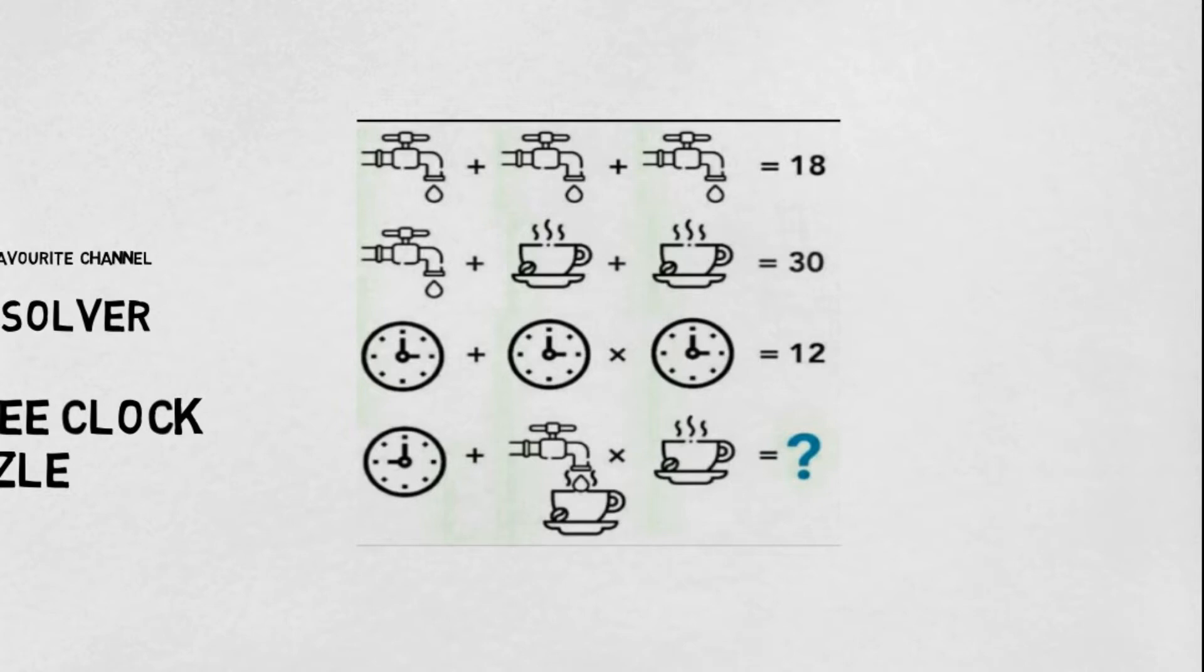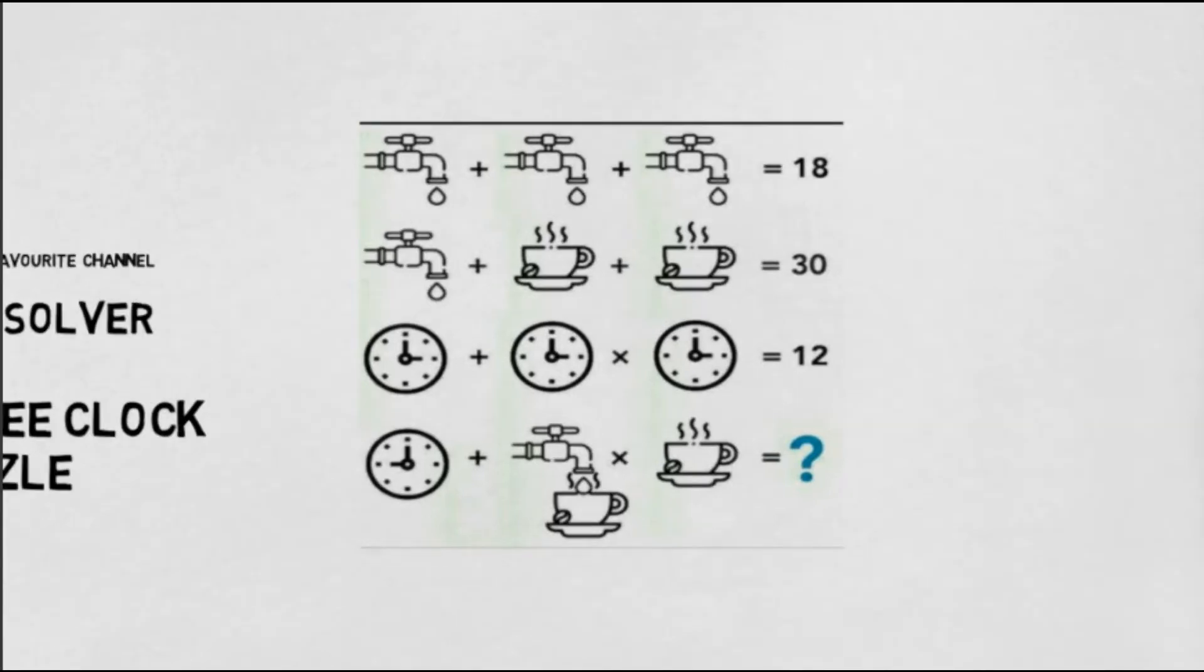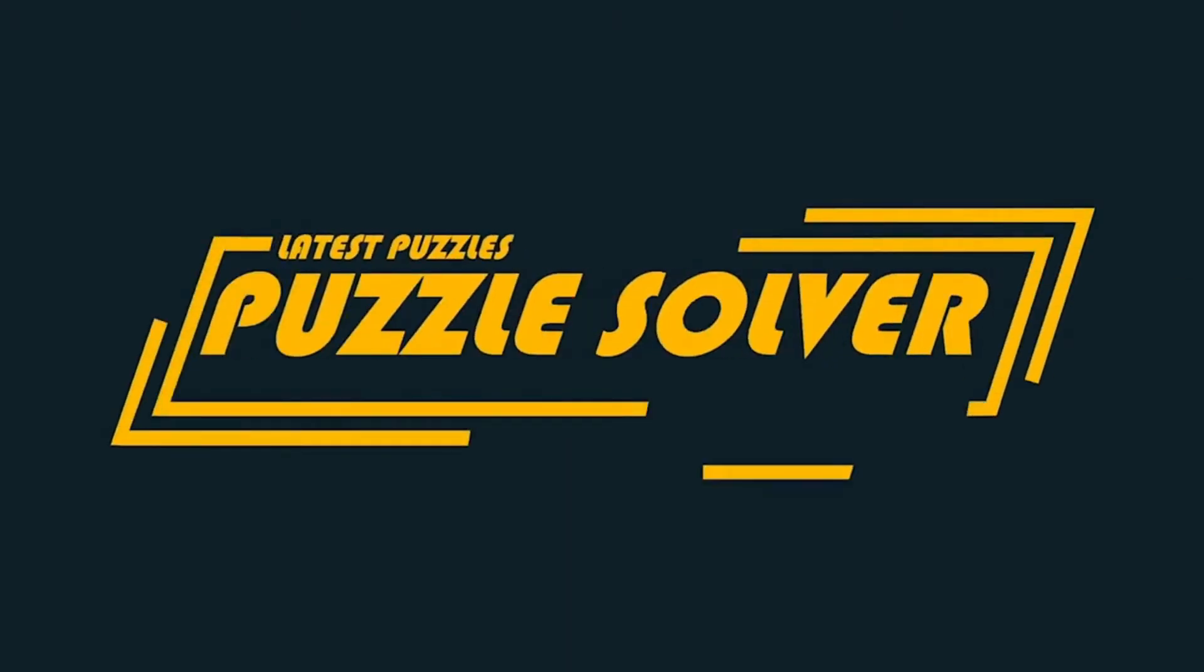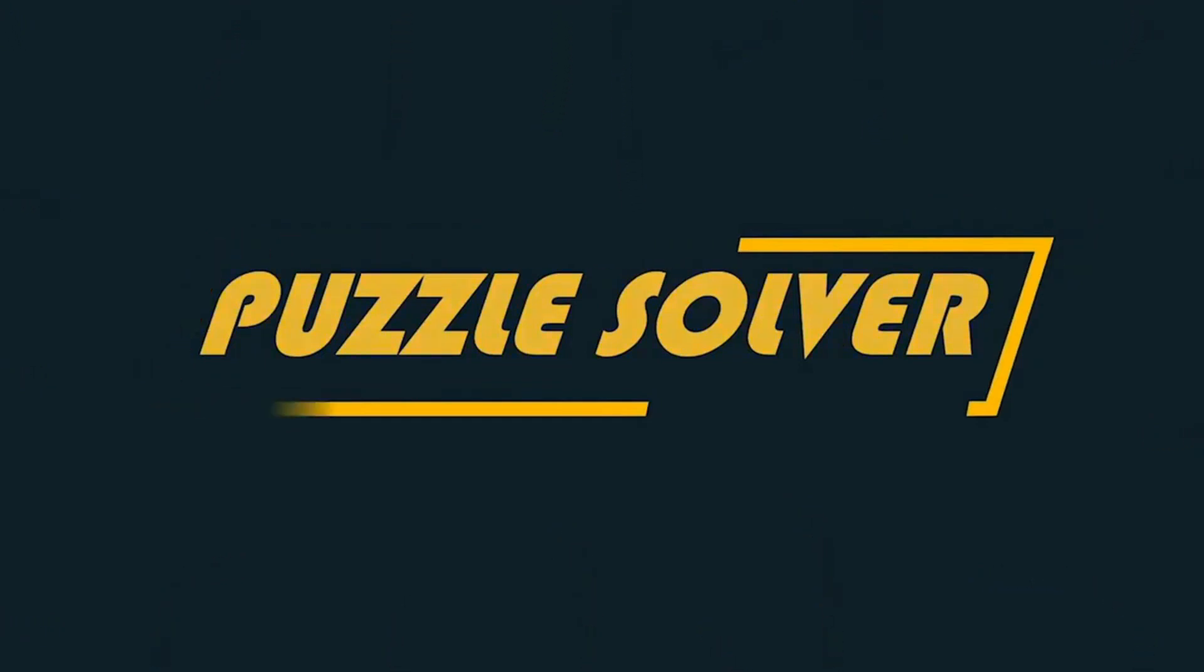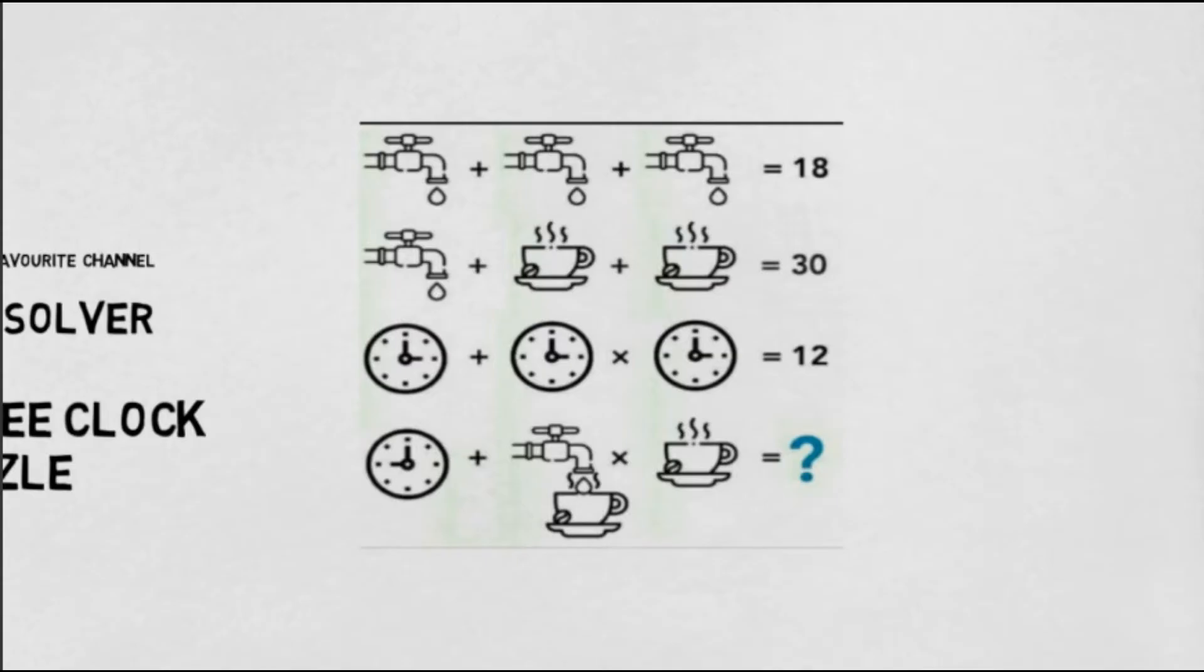We need to find out the last equation. We have to solve this puzzle. Friends, before we try to solve this puzzle, we have a timer for 30 seconds. We will start the timer and try to solve this puzzle in 30 seconds. Try to solve this puzzle and write your answer in the comments section.